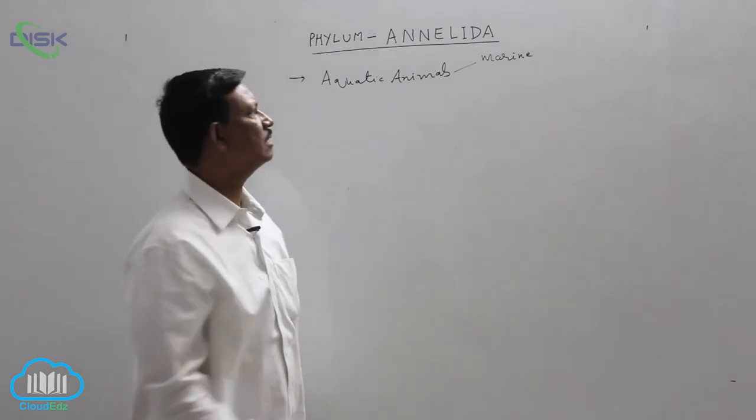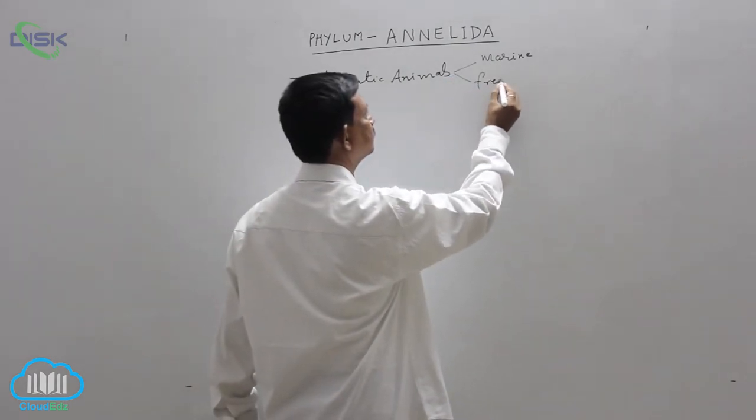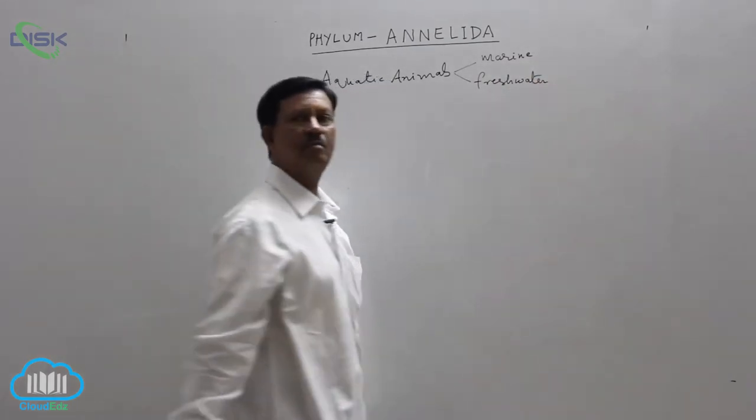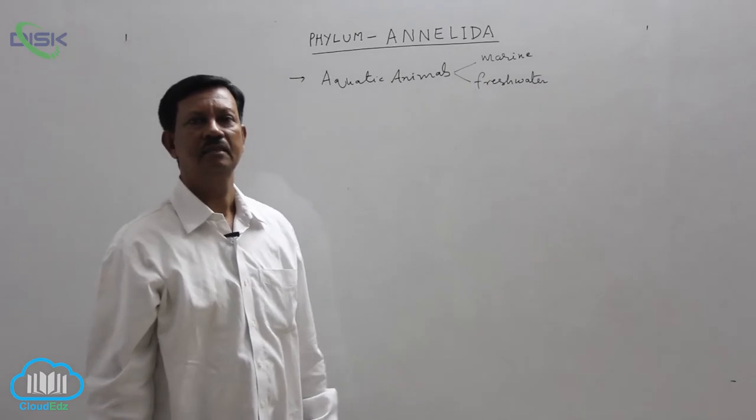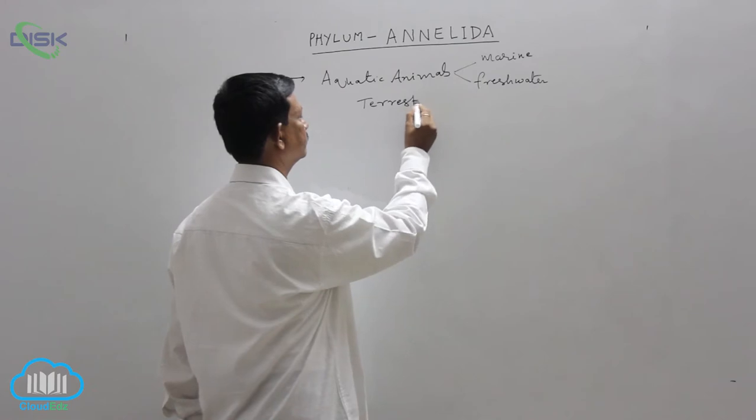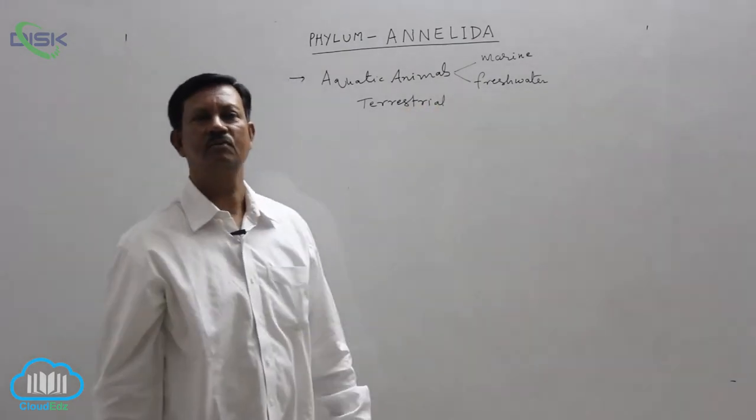Some animals are found in freshwater. Example, leech. Some are terrestrial animals. Example, earthworm.